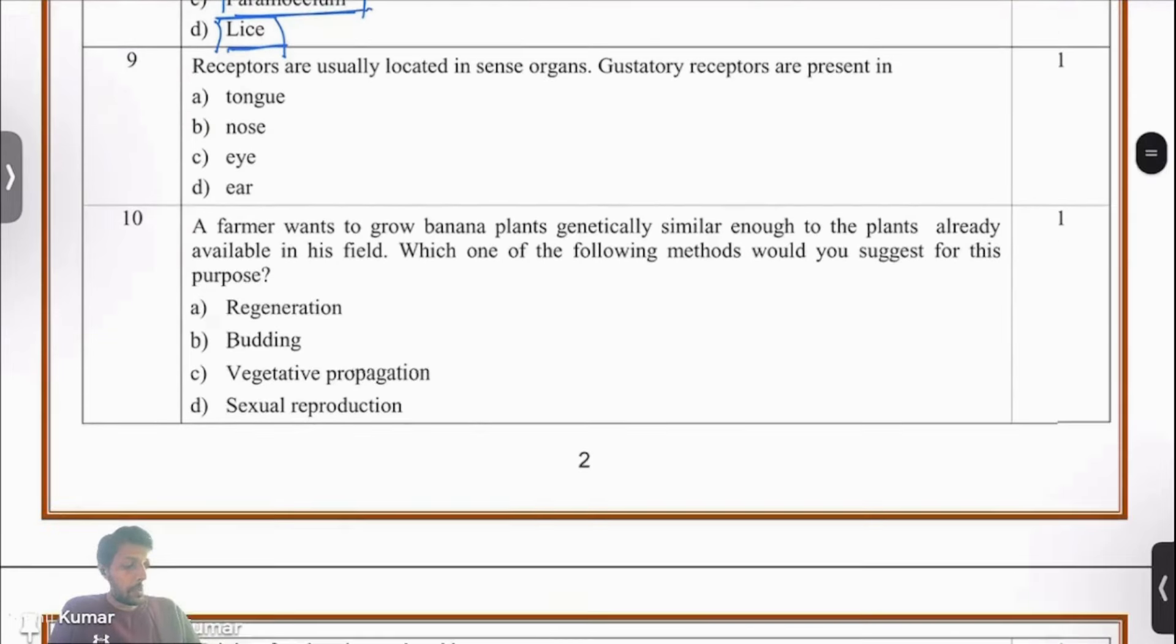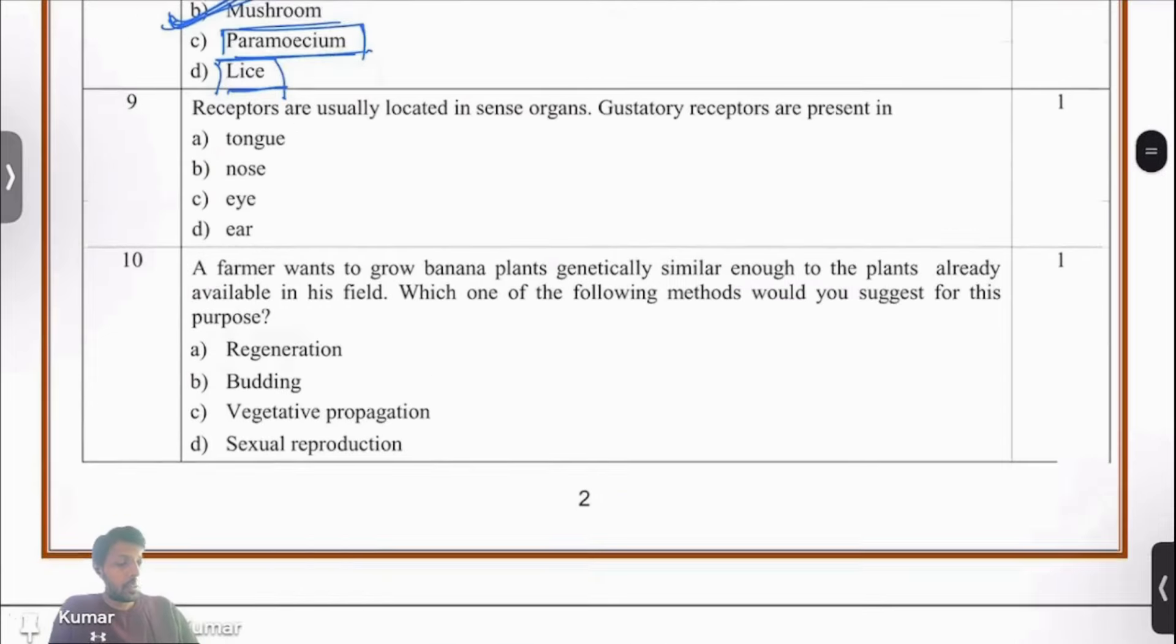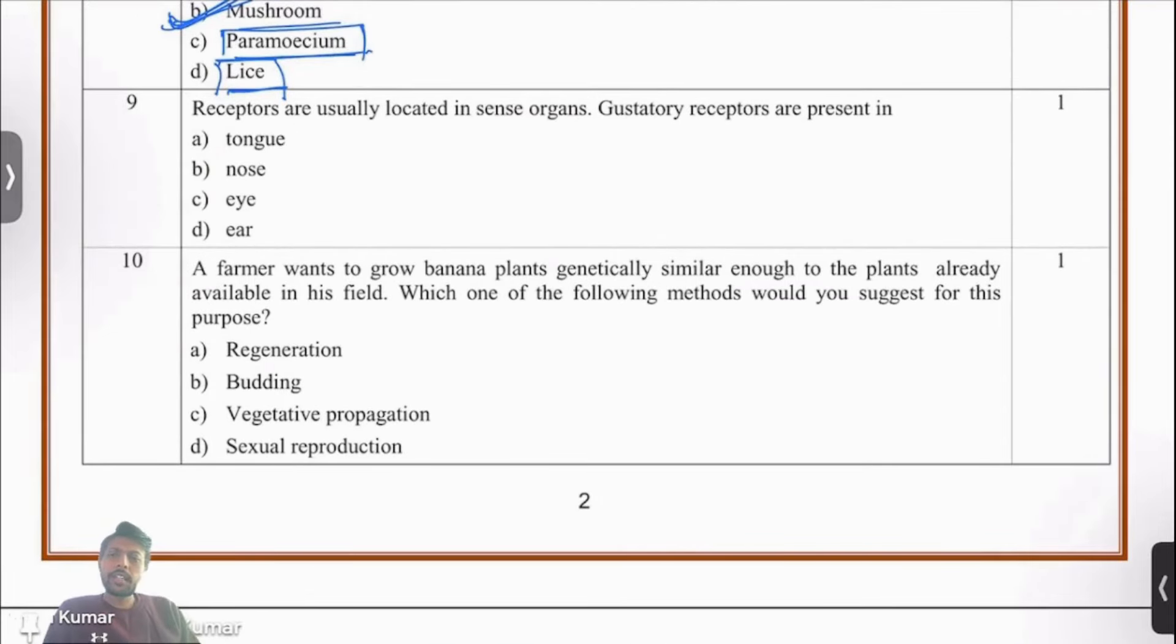Question number 9. Receptors are usually located in sense organs. Gustatory receptors, where are they present? Anything gustatory relates to the digestive system. Which of these four organs listed here relates to the digestive system? It's the tongue, because that's the inlet of food. You take food from your mouth, in your mouth you have your tongue. That's where your gustatory receptors also are present.